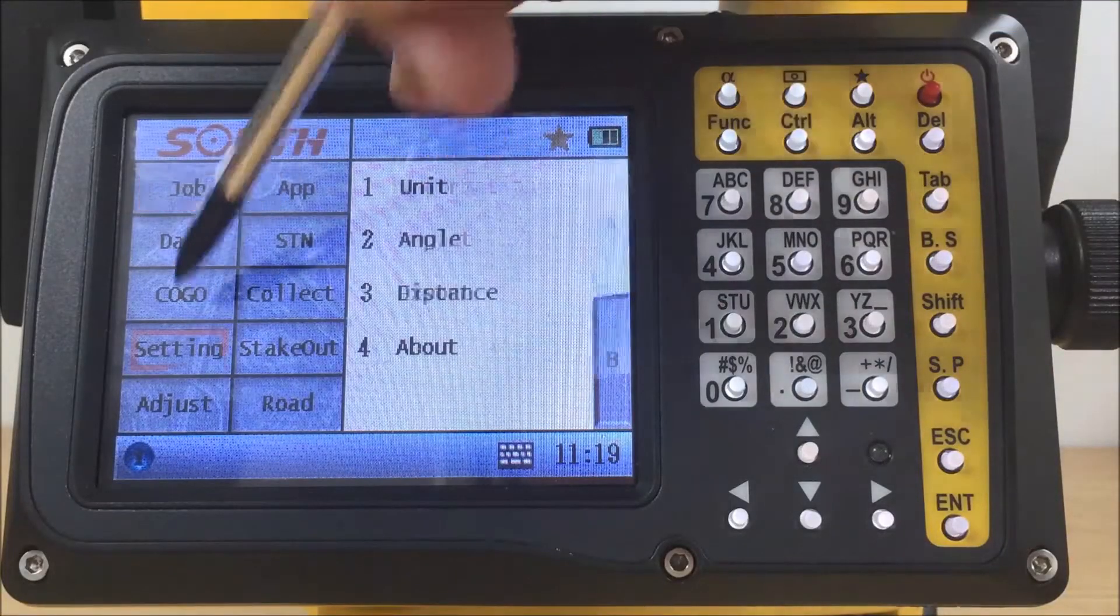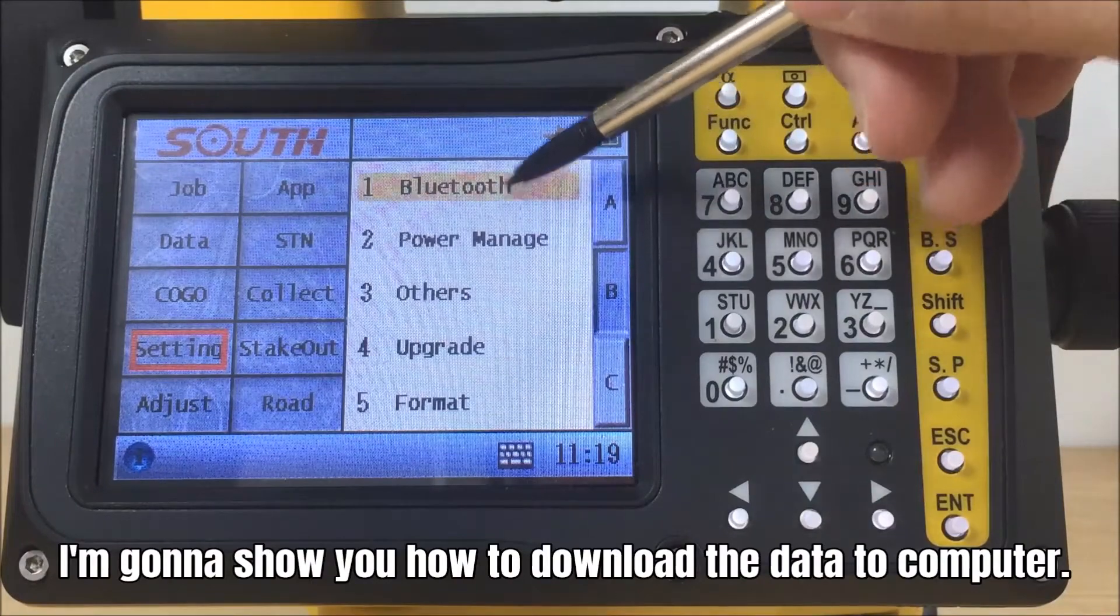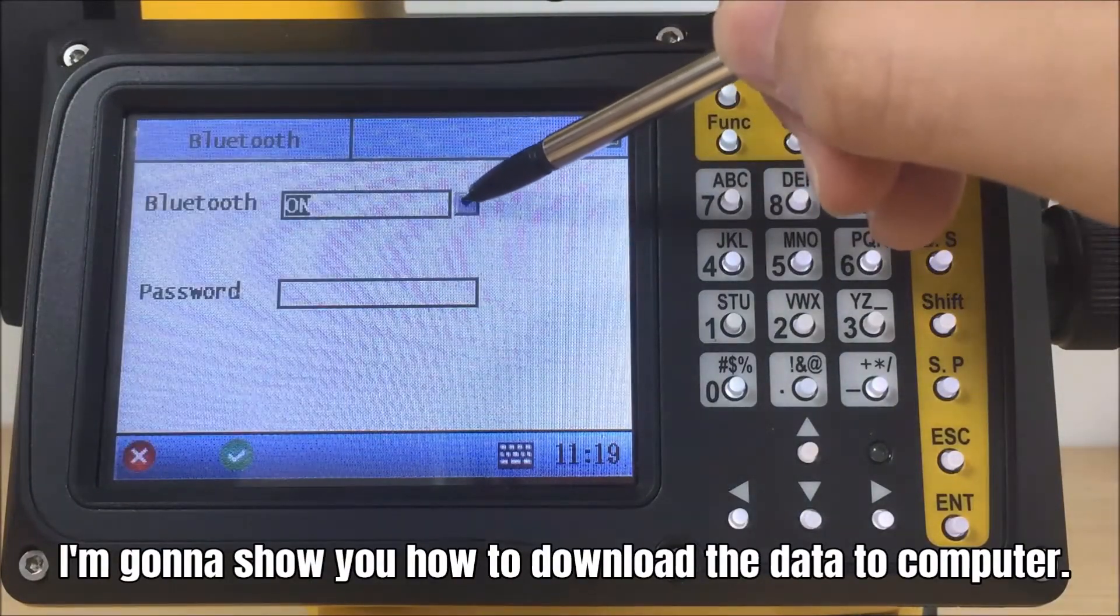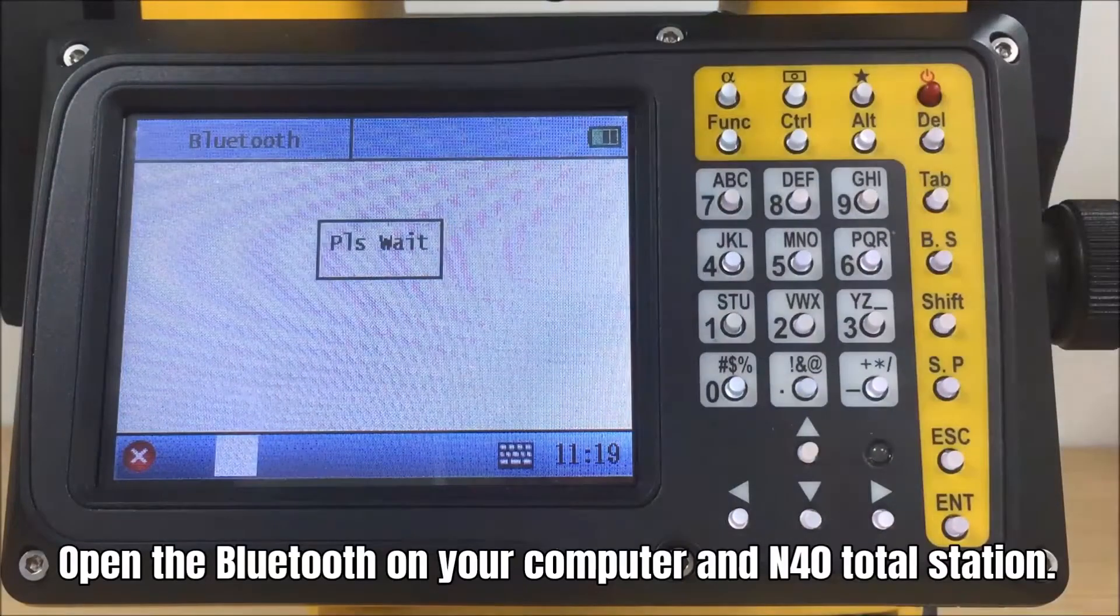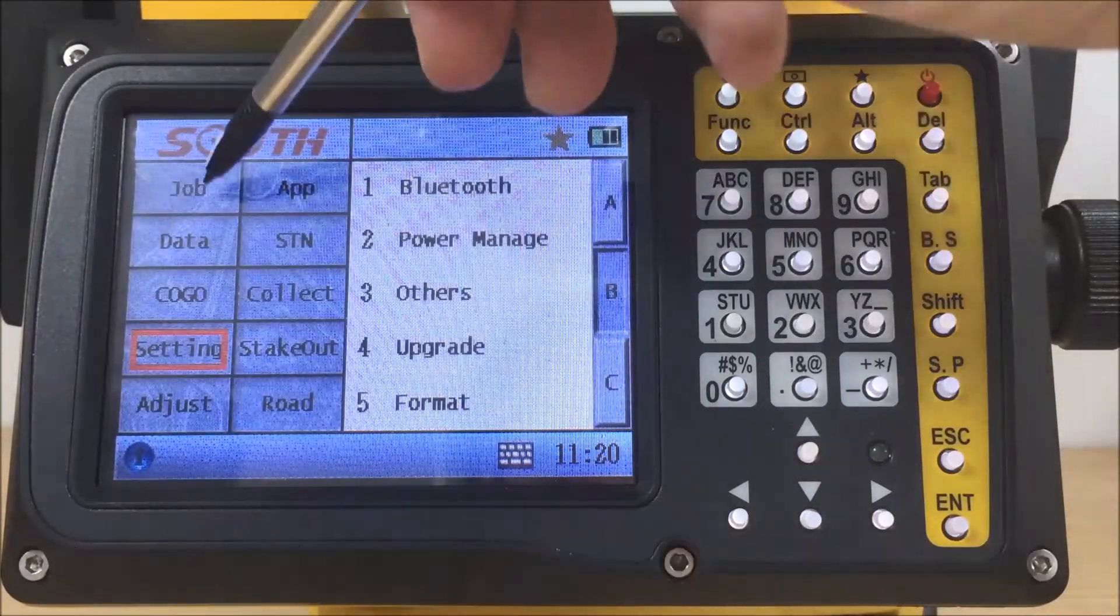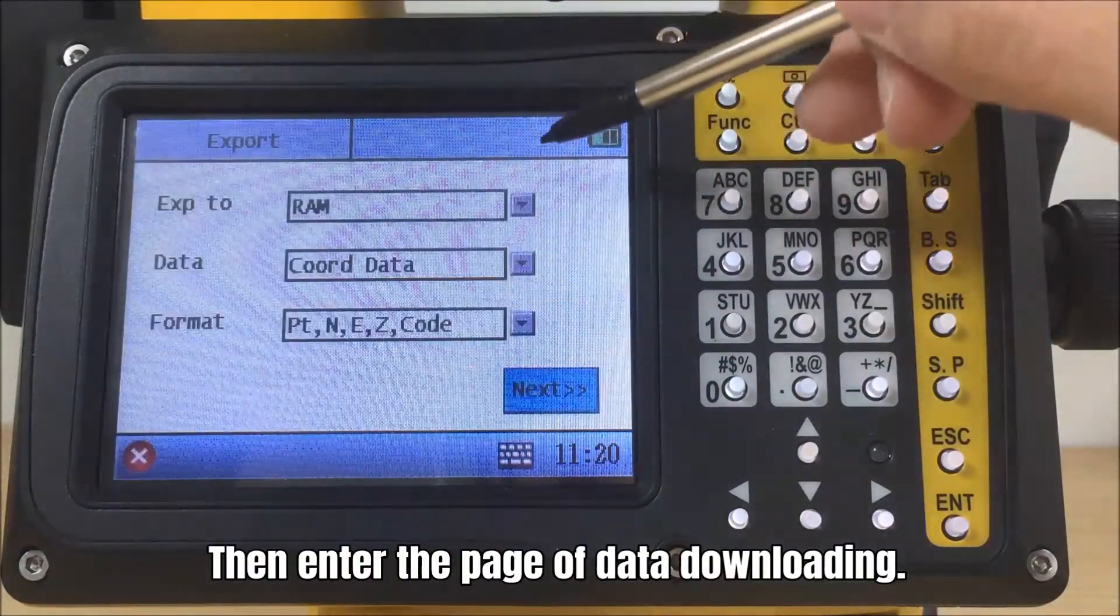N40 supports Bluetooth communications to external data collectors and wireless data download to computer. I'm gonna show you how to download the data to computer today. Open the Bluetooth on your computer and N40 Total Station. Then enter the page of data downloading.